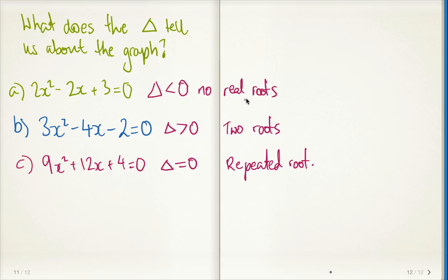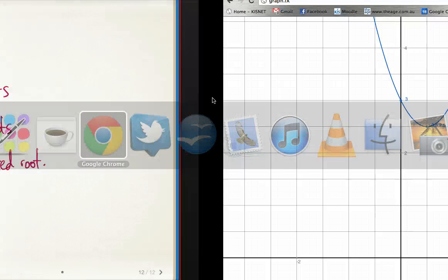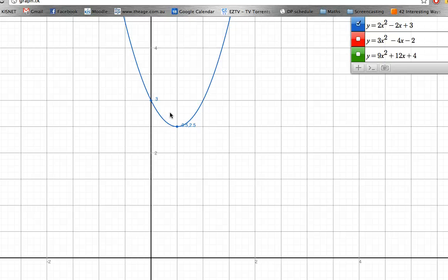Okay, so I'm going to graph these, and then we can see actually what that means. Let's consider this first one, 2x² - 2x + 3. We know our discriminant is less than 0, which means there are no real roots. So if we just go and have a look here, here's that function there.